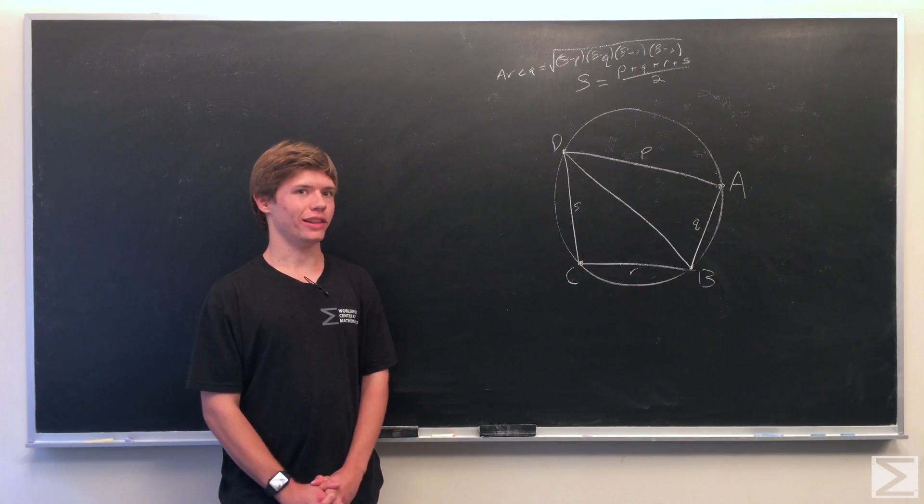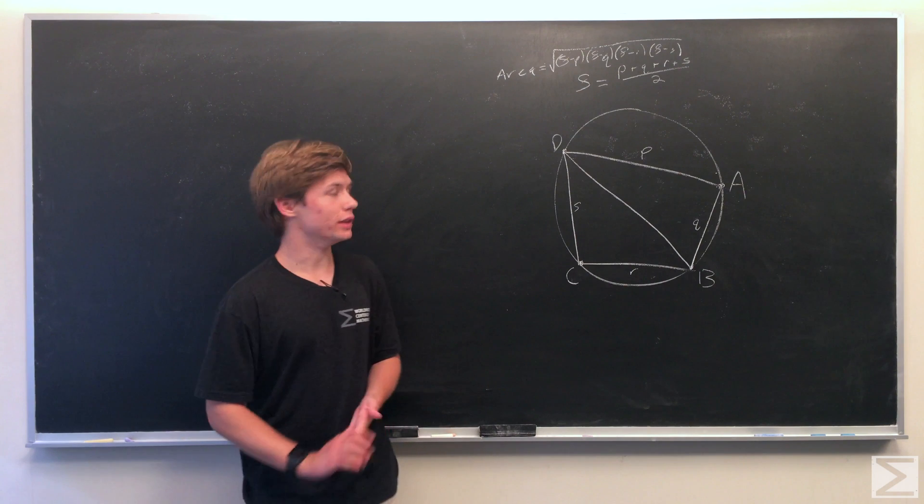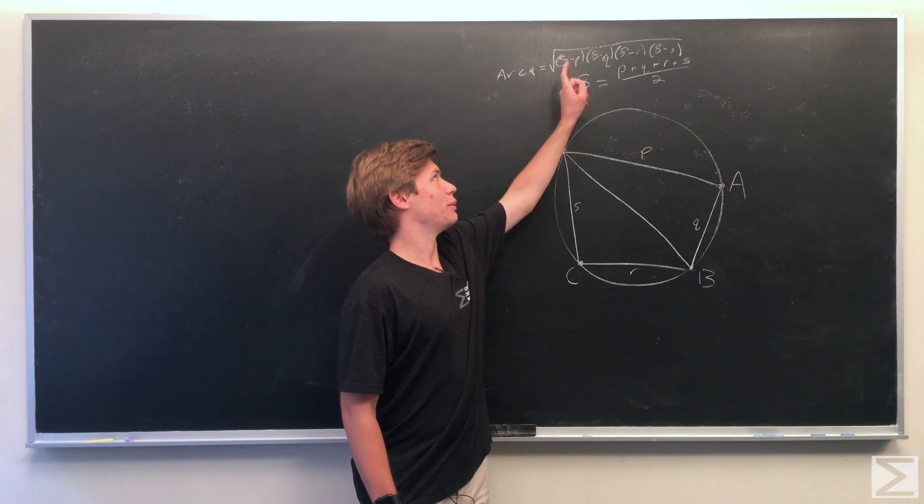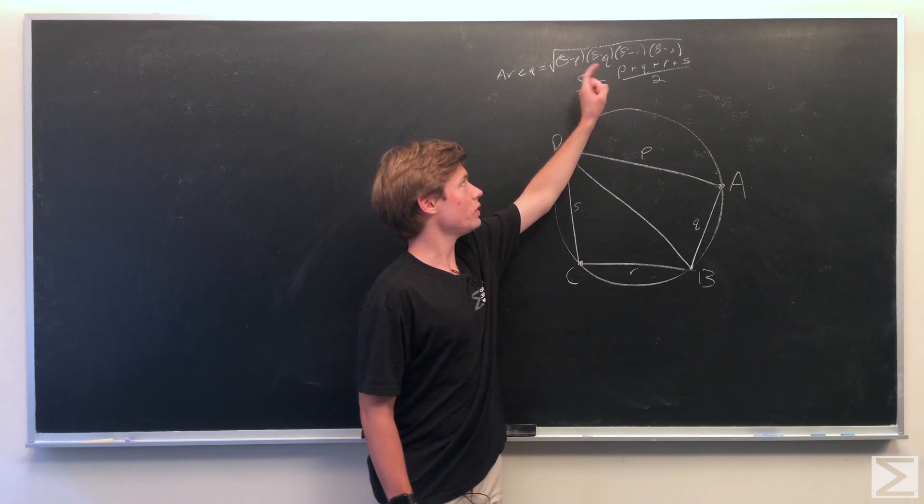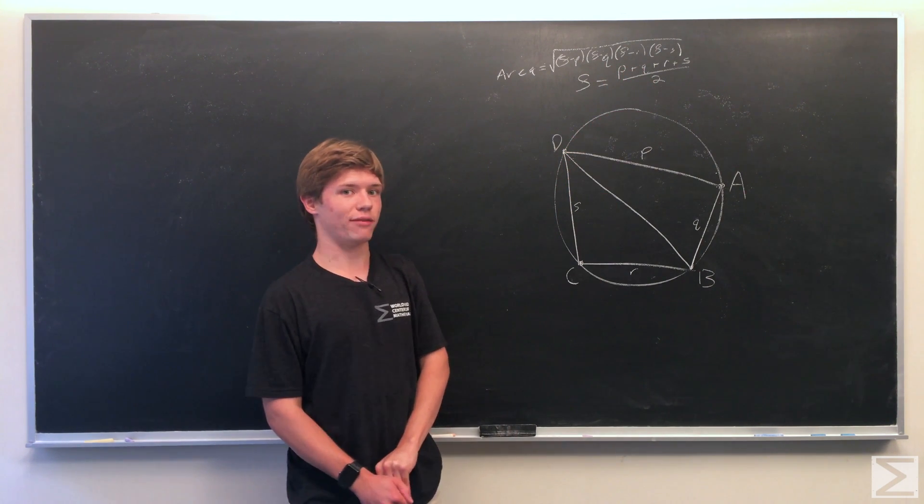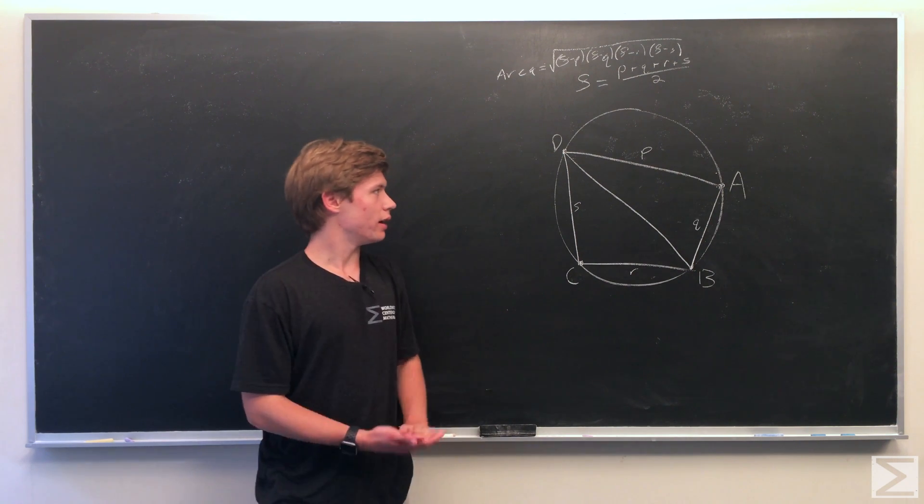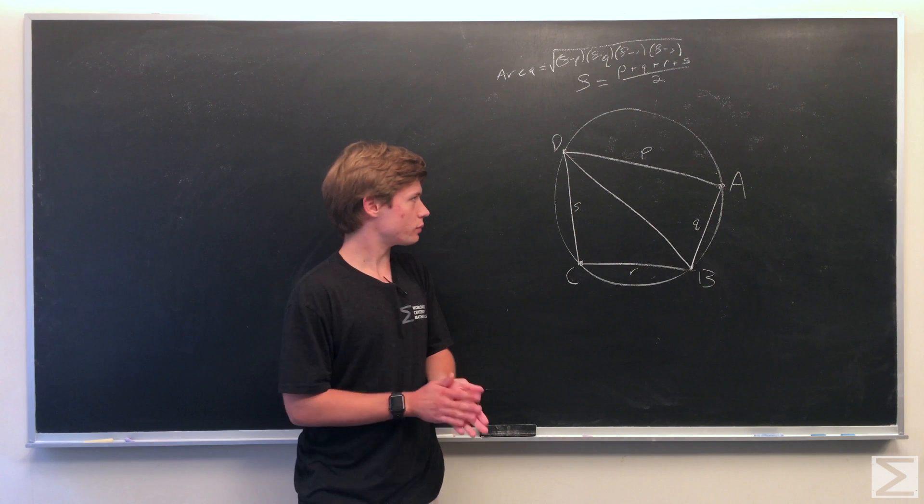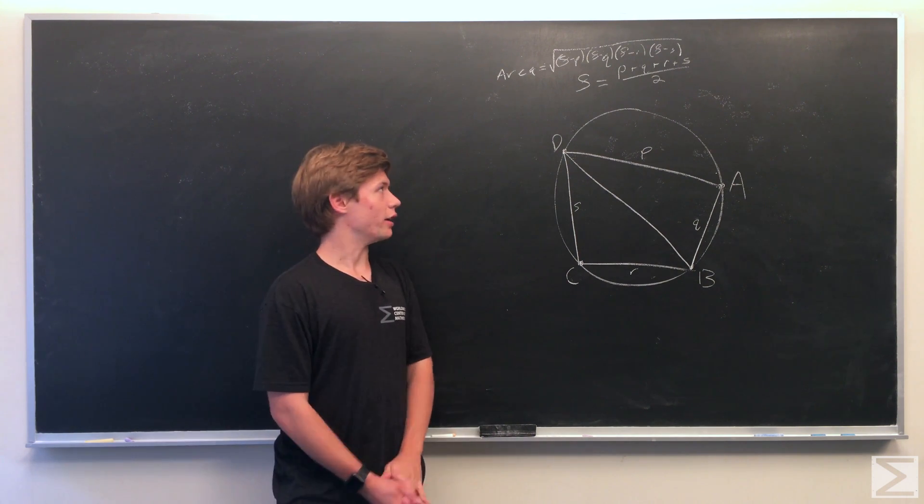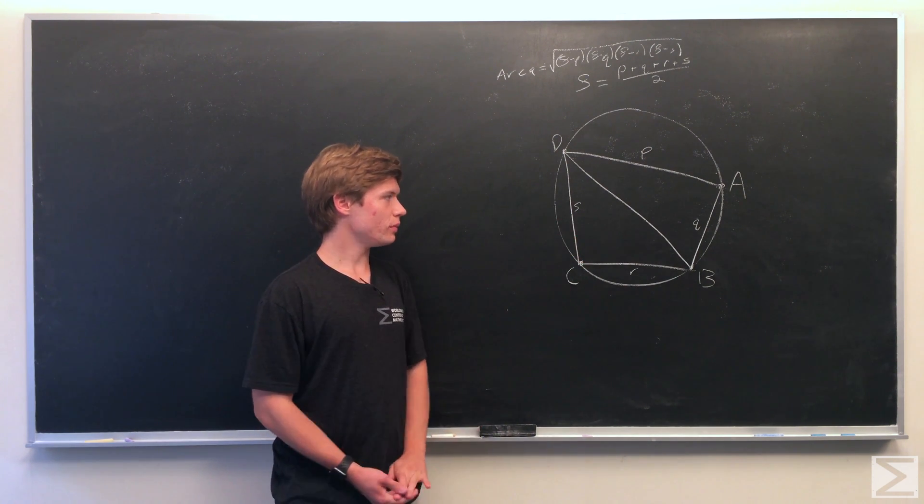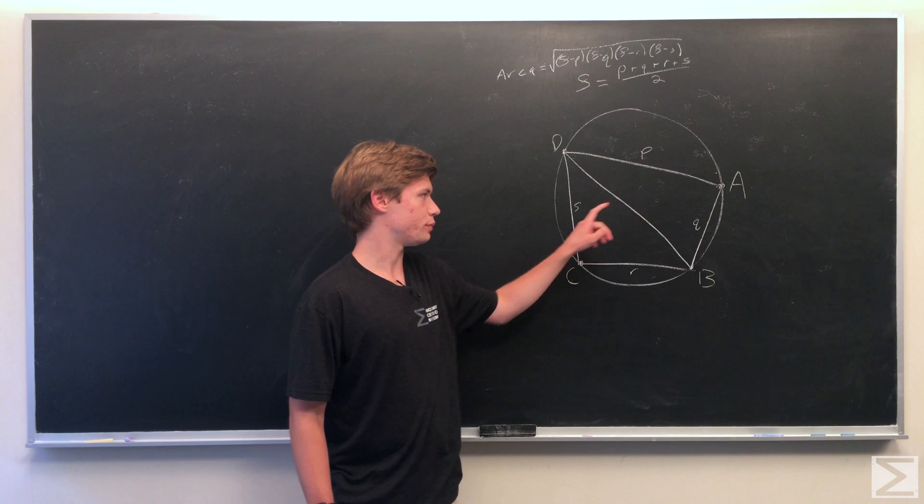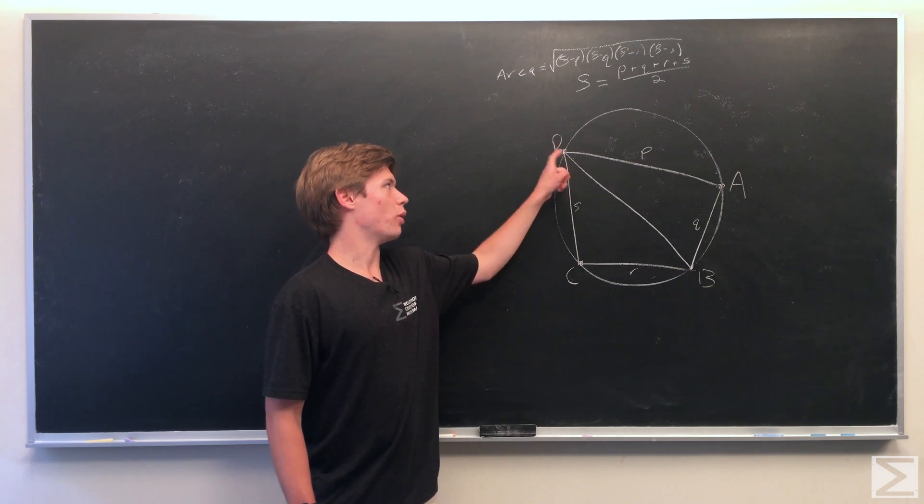We're going to show that the area of a cyclical quadrilateral is equal to the square root of semi-perimeter minus p times semi-perimeter minus q times semi-perimeter minus r times semi-perimeter minus s, where the semi-perimeter is half of the perimeter. We've got a quadrilateral ABCD with sides p, q, r, and s. We're going to derive the formula using this quadrilateral. The first thing we do is we look at the area of two triangles we've drawn by drawing a chord from d to b.